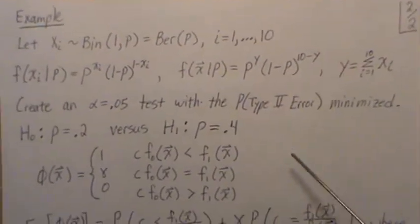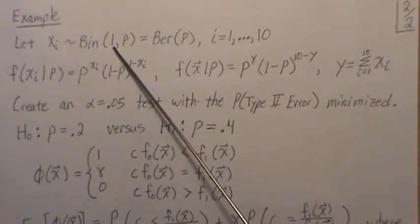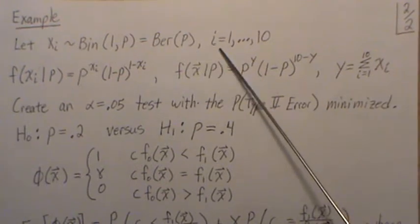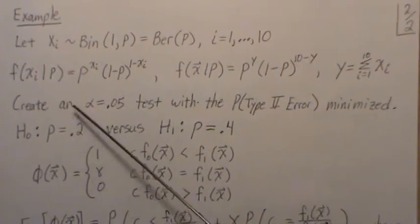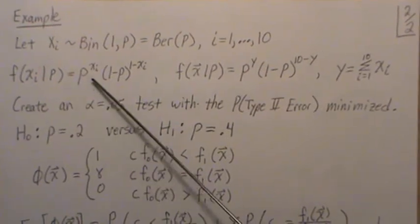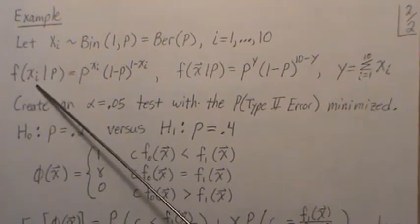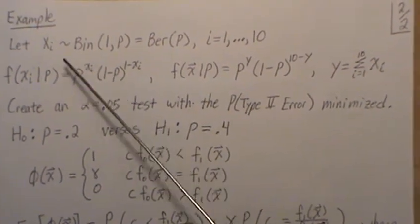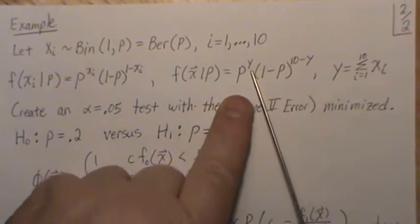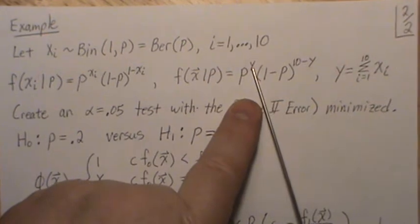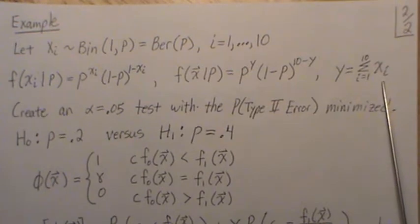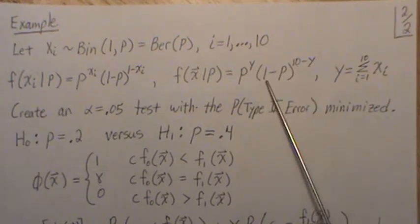Alright, so a quick example. So let's let our data be binomial with parameters 1 and p, which you can also call a Bernoulli distribution with p. Let's say we have a sample size 10. Our probability mass function would be for a data point would be this, and then the joint probability mass function would be the product across our sample, which would be this. And we're going to redefine y as the sum of the x's from 1 to 10, and then this is 10 minus y.